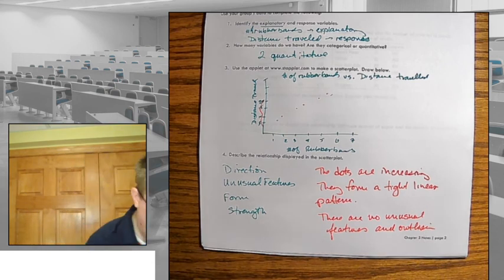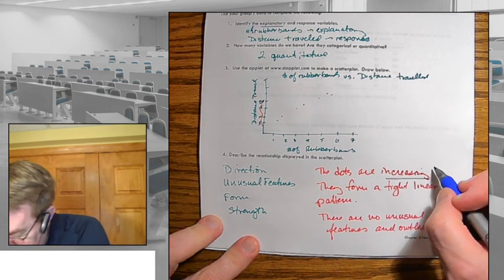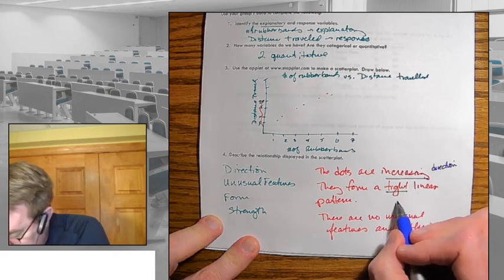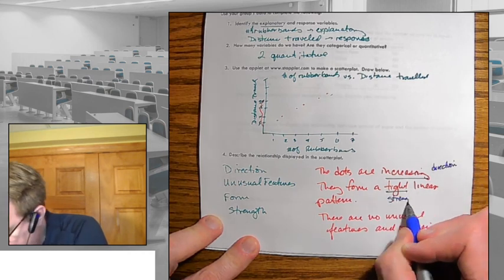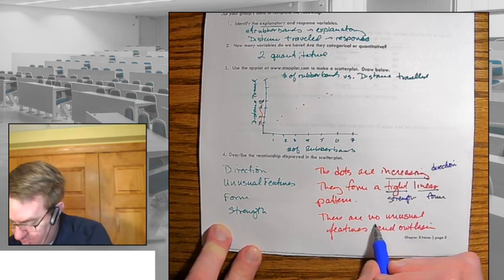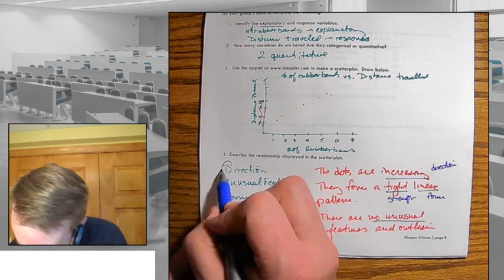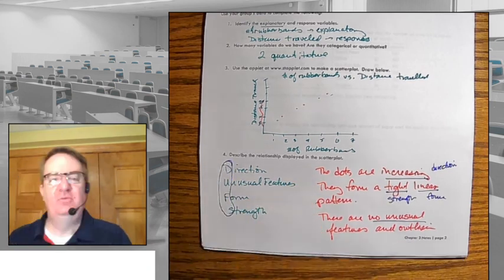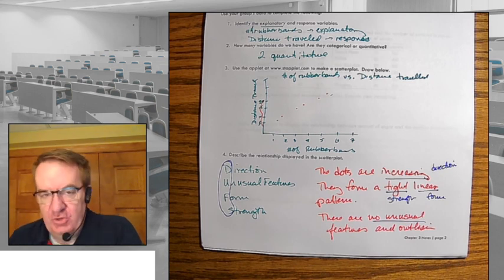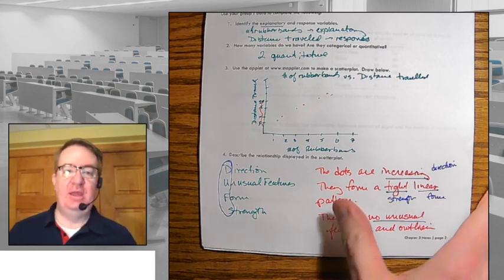So again, notice. So right here is my direction. This right here is my strength. This is my form. And then right here, there are no unusual outliers. So that's to see if there's any unusual features. And sometimes people use DUST as a way to remember that. If it's helpful for you, go ahead. But again, direction, unusual features, form, and strength. Those are the four areas that you need to use when you're describing a scatterplot.